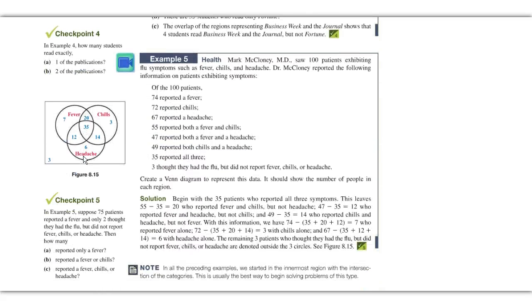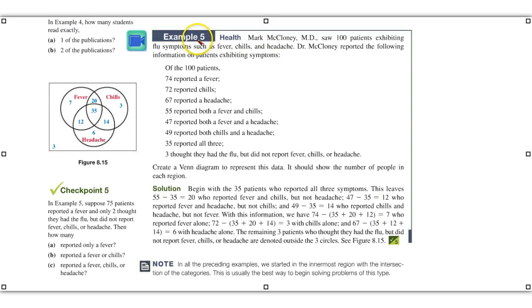Alright, let's take a look at example five now. Now, looking at example five here, we see there are one hundred patients exhibiting symptoms of fever, chills, headaches. And Dr. McClooney reported information on patients exhibiting these symptoms. Of the one hundred patients, you can see the numbers. And as you start to make a Venn diagram with three major symptoms, fever, chills, and headaches, you're going to make three circles. Label them.